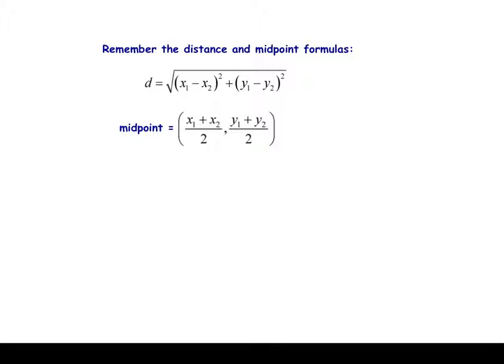On this page, I just want to remind you of the three formulas that we use when we do coordinate proofs. We have the distance formula, which you should memorize, the midpoint formula, which we should already have memorized, and I'm going to add one more formula which we already know — the slope formula. Just add it to this page. So we remember that there are three formulas involved in coordinate proofs.